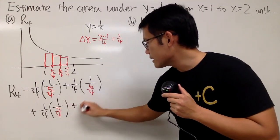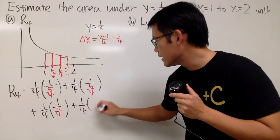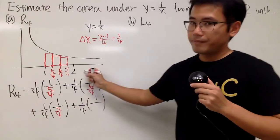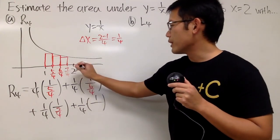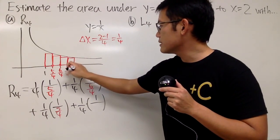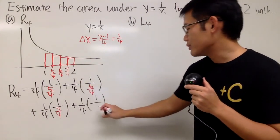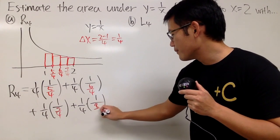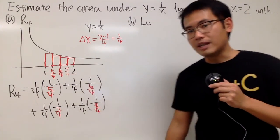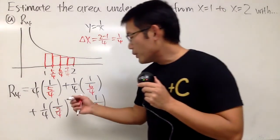And then you add the last one: 1 over 4 times 1 over... The last x value is 2. 2, and then you go up like this. Well, I will actually write it as 8 over 4 so you can have all the common denominators, all the good stuff.